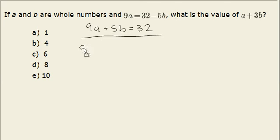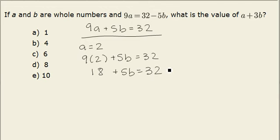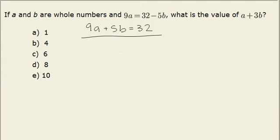Next, I will try a equals 2, so substitute 2 in for a. 9 times 2 is 18, plus 5b equals 32. Subtract 18 from both sides to get 5b equals 14. And 14 is not divisible by 5 to get a whole number, so a equals 2 is also not a solution.